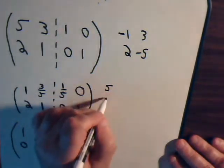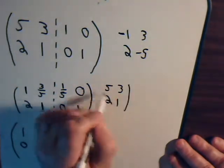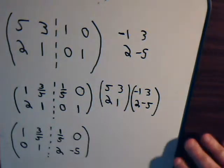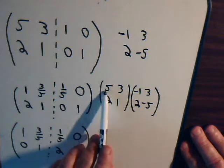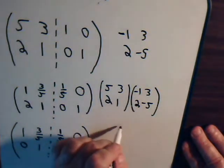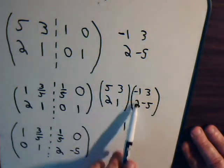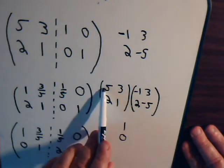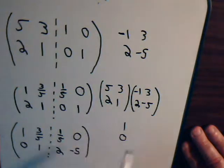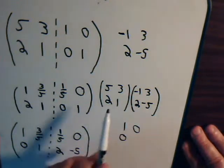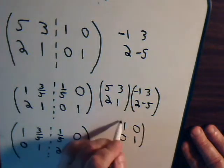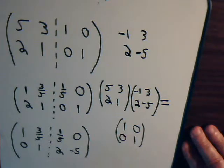Here we have 5, 2, 3, 1 times minus 1, 2, 3, minus 5. Go across and down: minus 5 plus 6, that's plus 1. Go across and down: minus 2 plus 2, that's 0. Again, go across and down: 15 minus 15, that's 0. Go across and down: 3 times 2 is 6, minus 5 is 1. It gives us the identity matrix. So indeed, this matrix is the inverse of that matrix.